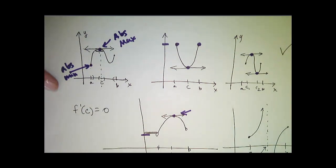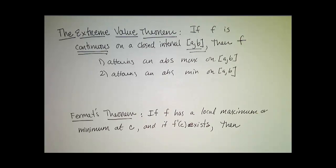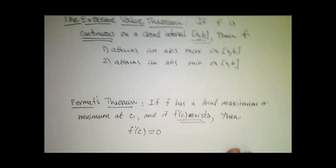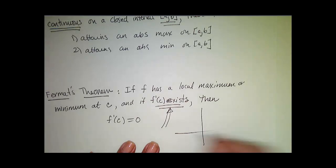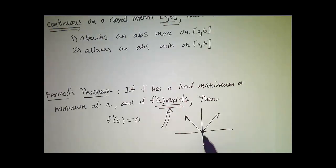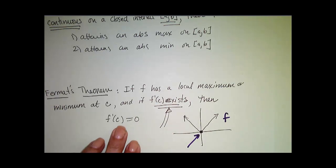That's actually also an important theorem, called Fermat's Theorem. If f has a local maximum or local minimum at c, and if f'(c) exists, then f'(c) = 0. Now you may wonder why that condition needs to be in there. Remember the absolute value function — there is an absolute minimum at that point, but the derivative doesn't exist at 0 for the absolute value function. So we know f has a local minimum at c, but we don't have that f'(c) exists, so we can't conclude that f'(c) = 0.